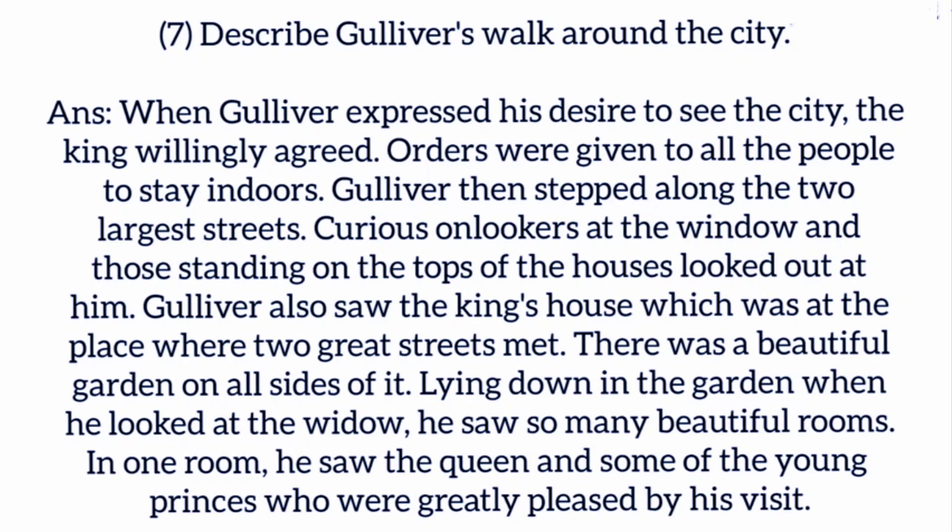Describe Gulliver's walk around the city. When Gulliver expressed his desire to see the city, the king willingly agreed. Orders were given to all the people to stay indoors. Gulliver then stepped along the two largest streets while curious onlookers at windows and on rooftops looked at him. He also saw the king's house at the place where two great streets met, surrounded by a beautiful garden. Lying down in the garden and looking at the windows, he saw many beautiful rooms. In one room he saw the queen and some of the youngest princesses, who were greatly pleased by the visit.